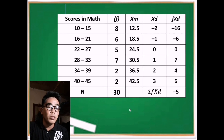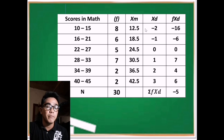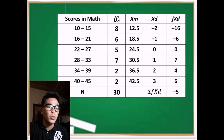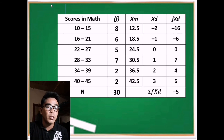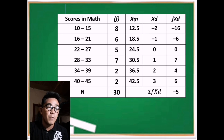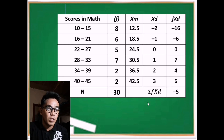To summarize, we can solve the mean of grouped data using five columns. Two columns are already given in the frequency distribution, and we add three more: the class mark or class midpoint, the deviation, and the product of the frequency and the deviation. This is how you compute the mean of grouped data.